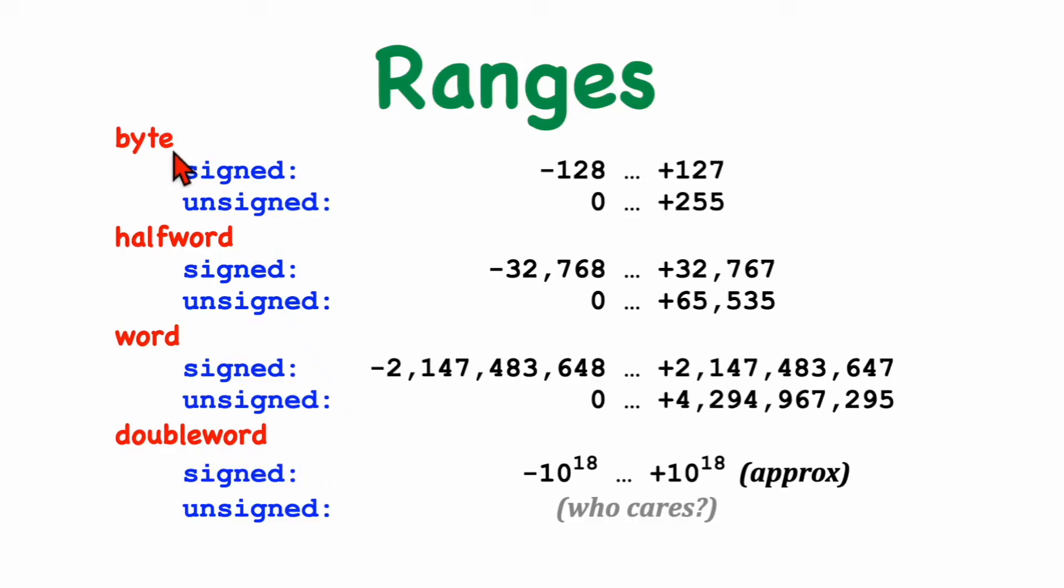With bytes, we have 8 bits, so we have 2 to the 8th different values, or 256 different values. With a signed representation, we split that between positive and negative numbers roughly equally. But with unsigned representation, we get rid of the negative numbers, and our maximum value is roughly twice what it is with signed representation.